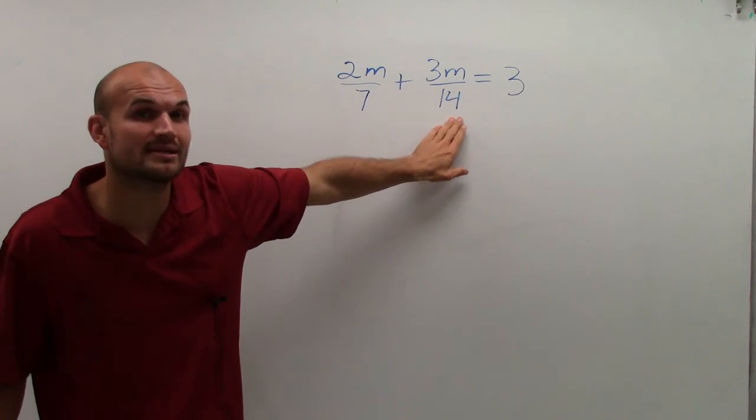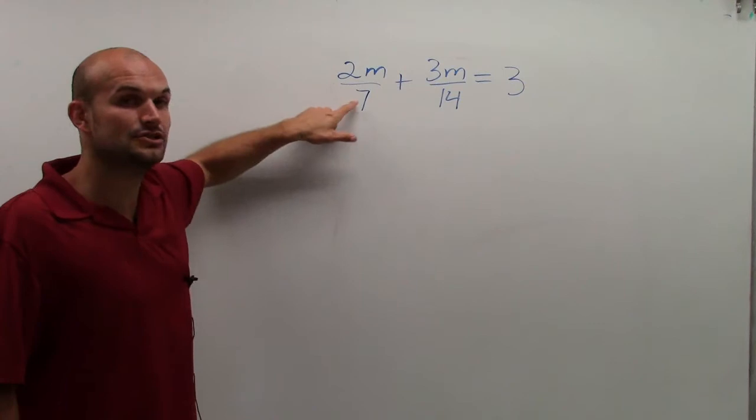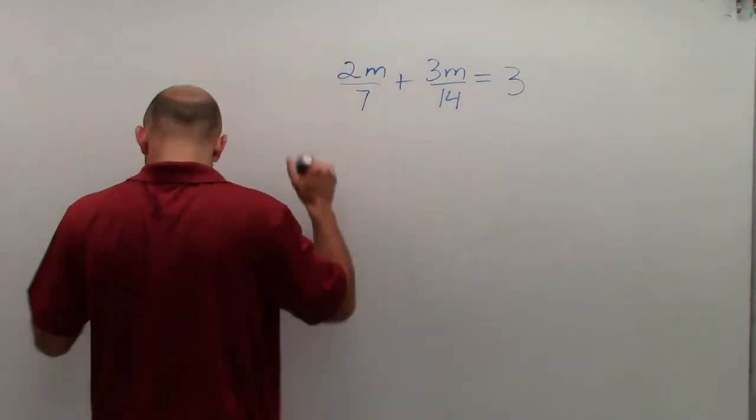Now, since 14 is already the least common multiple, I don't need to do anything to it, because it's already that number. However, I need to transform 7 to be 14. So to do that, I need to multiply by 2.